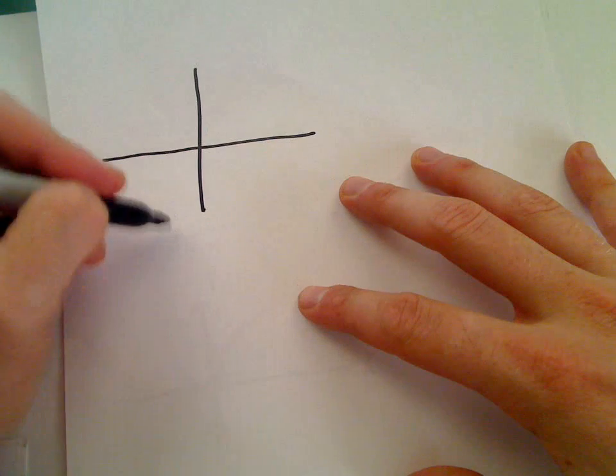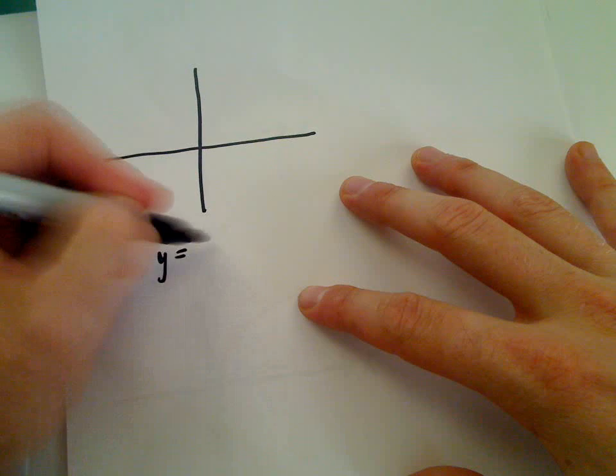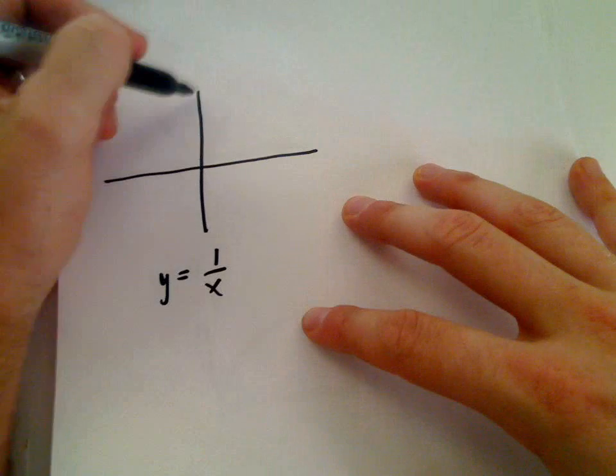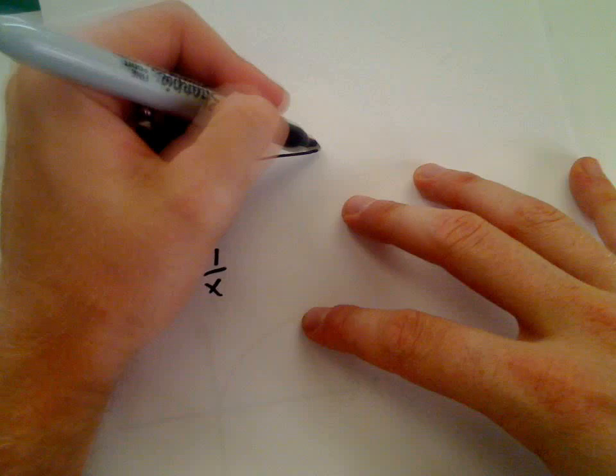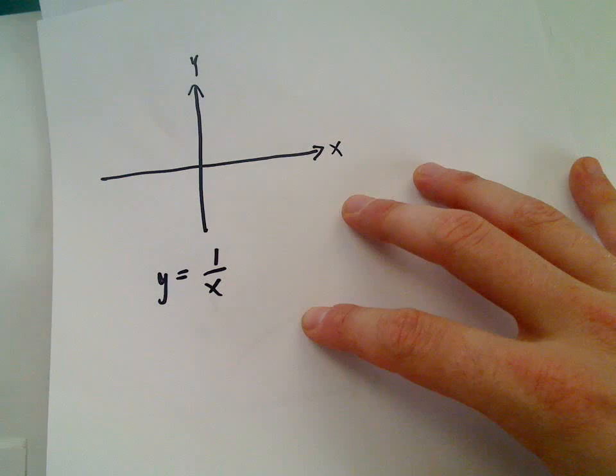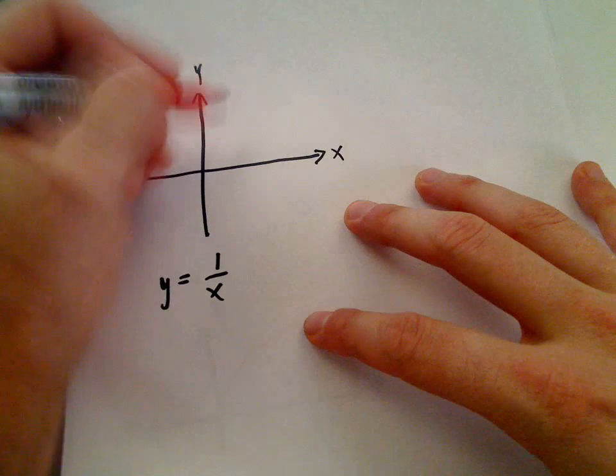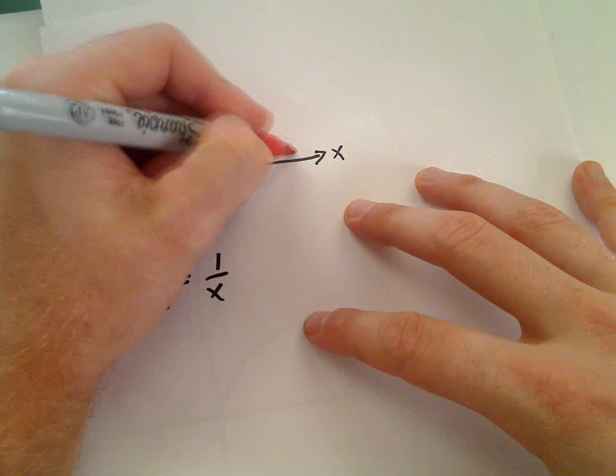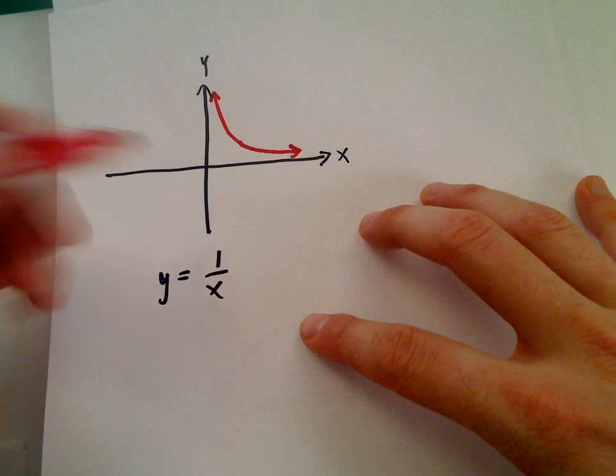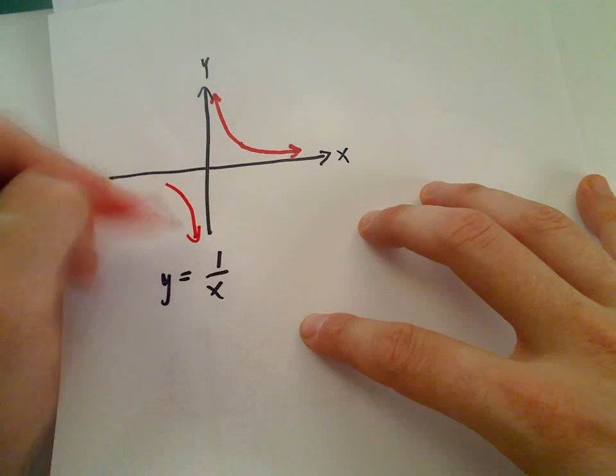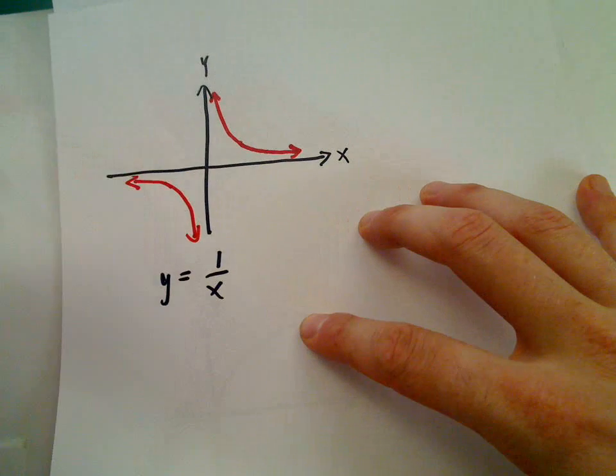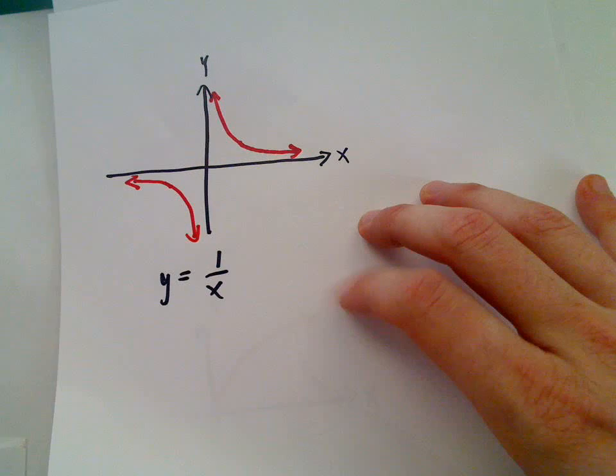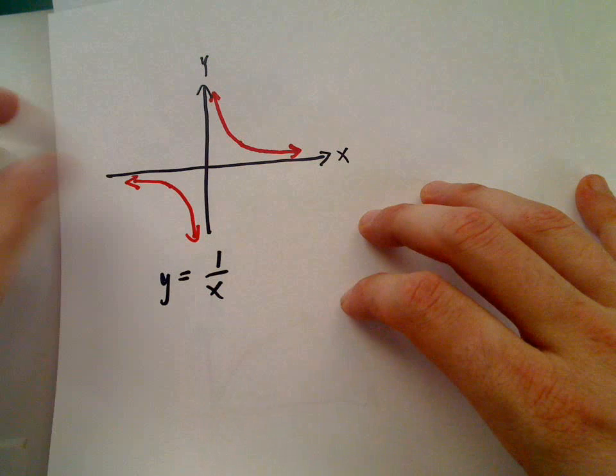The graph of y equals 1 over x. That graph will get closer to the y-axis, but never touch it. Likewise, it'll get closer to the x-axis, but never touch it. And then it'll go down, and it'll basically just be kind of a reflection of that graph. So there's y equals 1 over x.